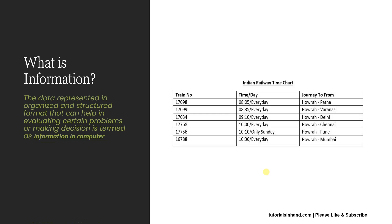Information is actually well-organized and structured data. If we see the world, we will see a lot of data floating around us. When that data is collected and connected together in a well-structured and organized format, it becomes helpful in certain scenarios and to make decisions on certain aspects. That organized data is known as information in computer, and it is very critical in helping in decision-making.